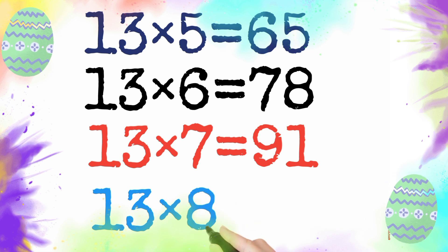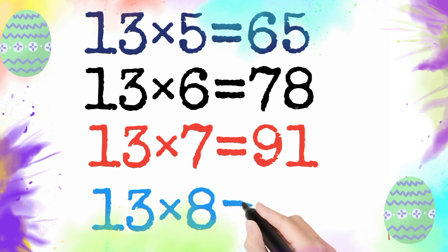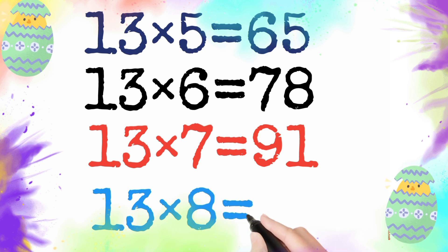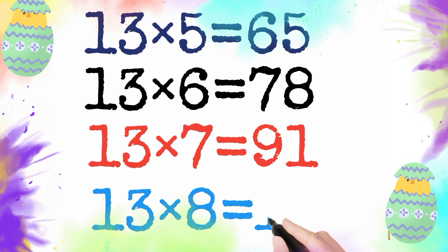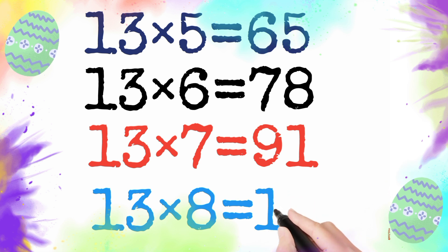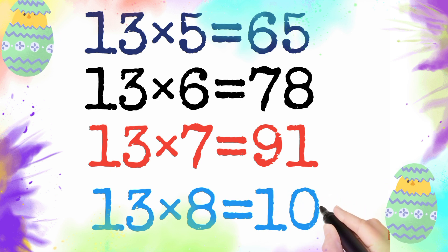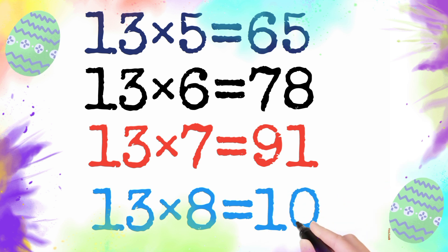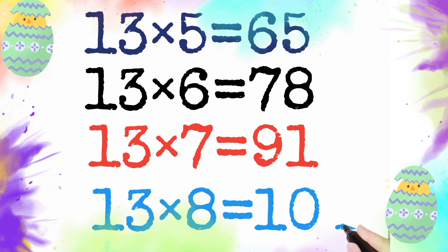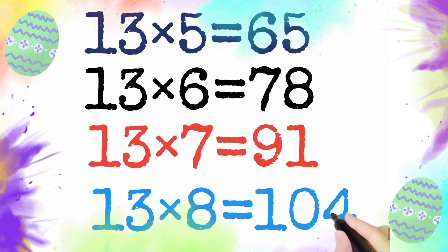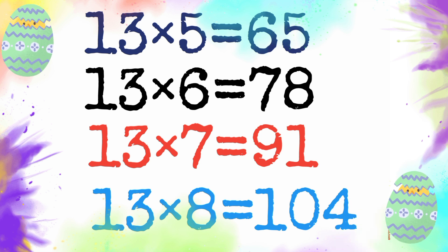13 multiply by 8 is equal to 104. So 13 times 8 is 104.